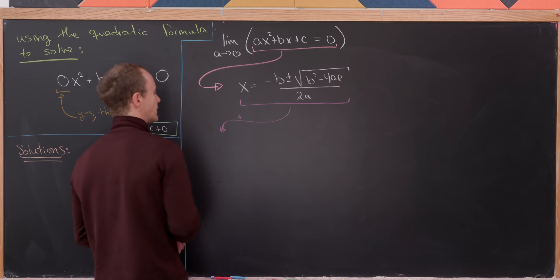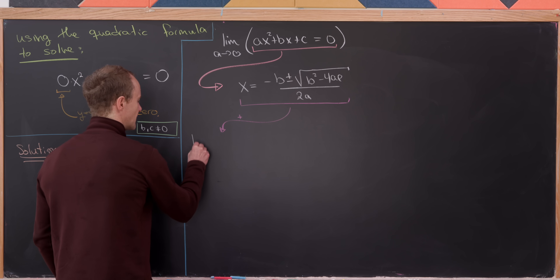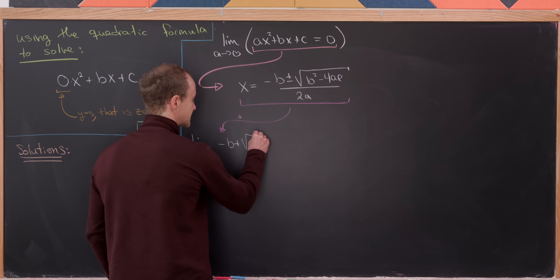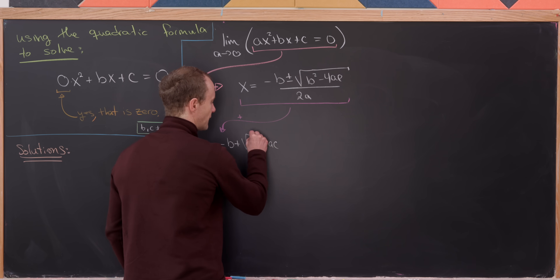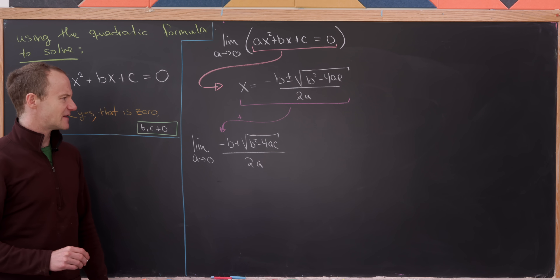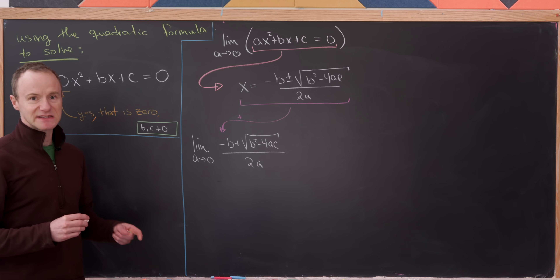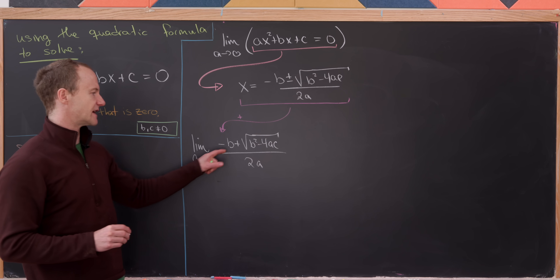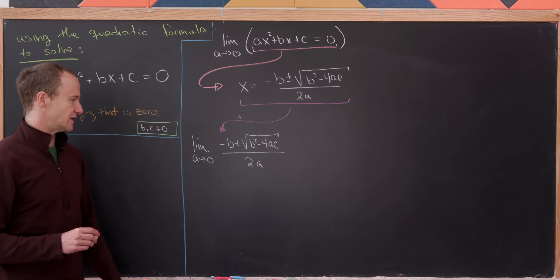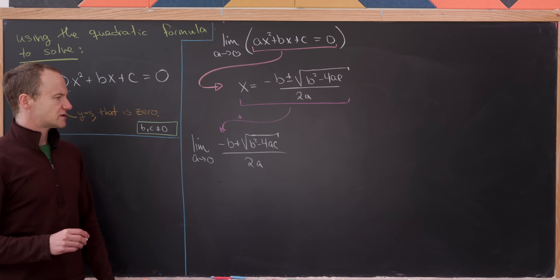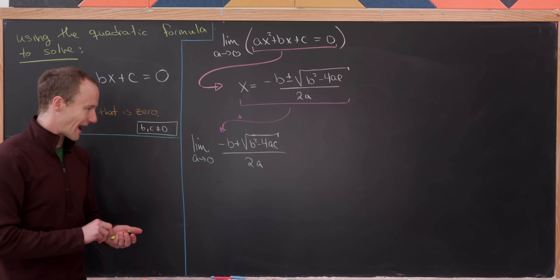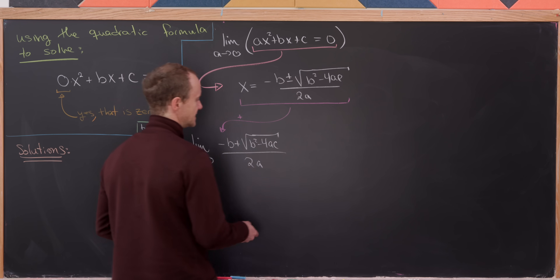Let's look at the first case using the plus sign. We've got the limit as a approaches 0 of negative b plus the square root of b² minus 4ac, all over 2a. Observe that it's an indeterminate form of type 0 over 0, since the numerator goes to negative b plus b equals 0. So multiplying by the radical conjugate is a good idea.